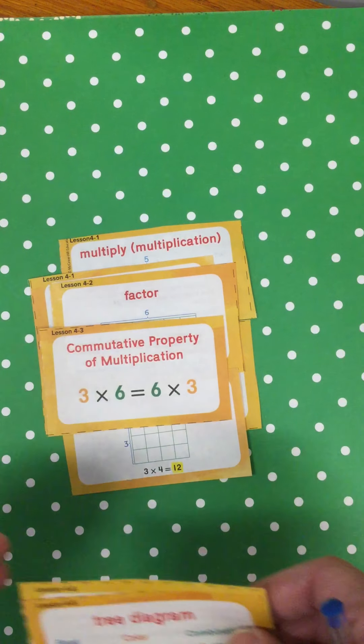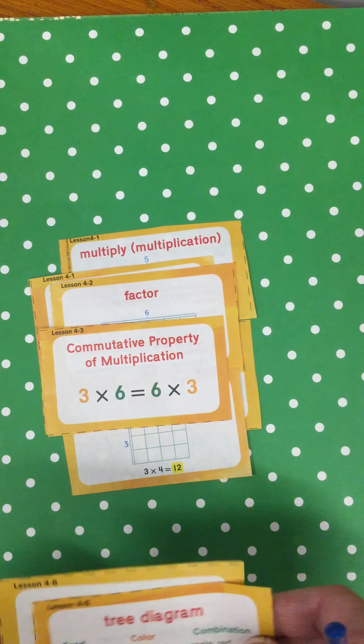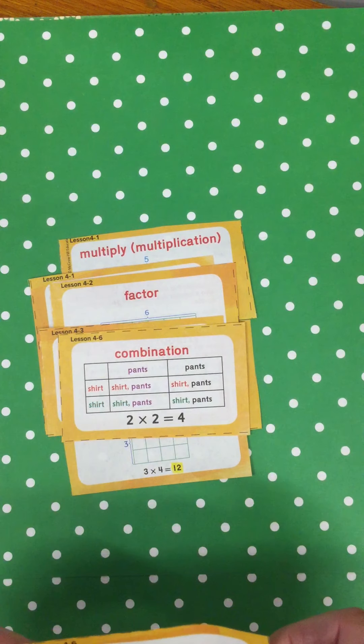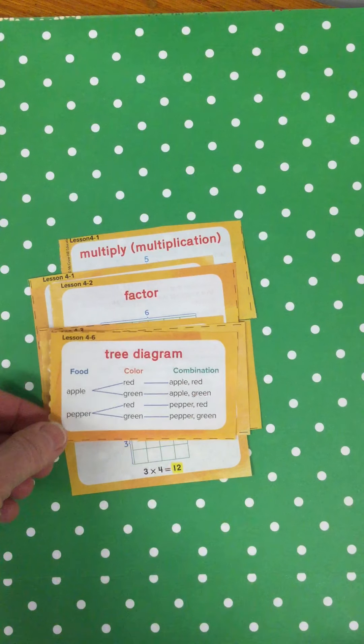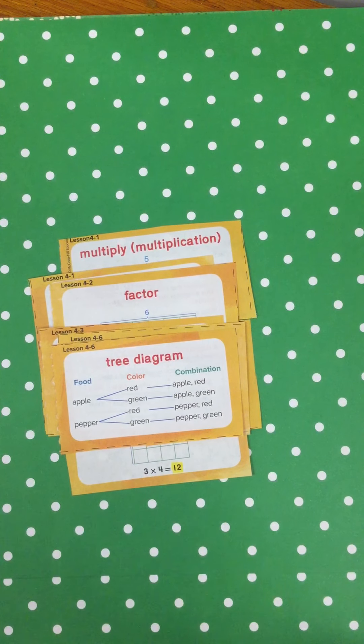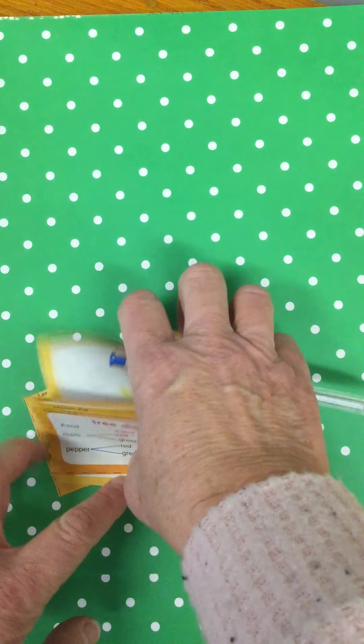And what else will we touch on? We're going to be doing understanding the commutative property of multiplication in this chapter. We're going to be looking at combinations and how that helps us solve things. And also making tree diagrams to help us understand multiplication.